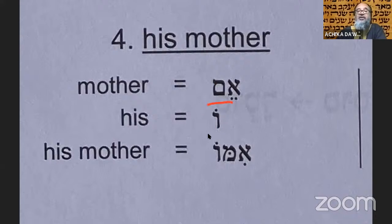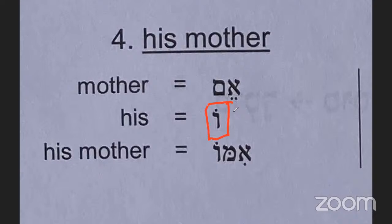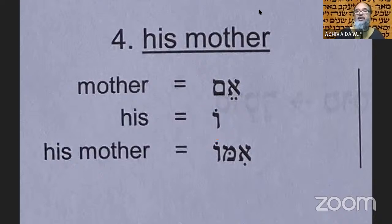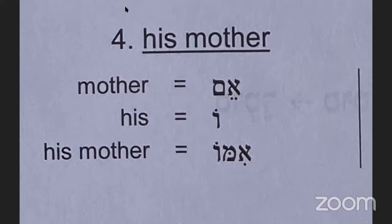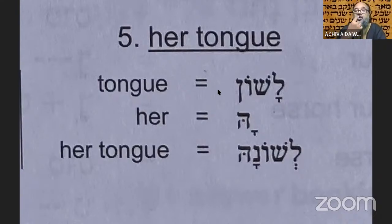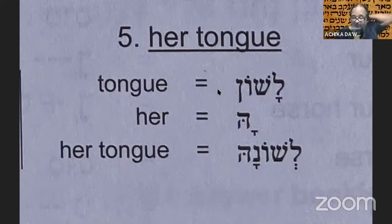So av means 'father.' His father would be avo — that's the 'o' ending for 'his.' What you're looking for is knowing the vocabulary word, then recognizing the ending. The more you read, the better you'll get — your brain will automatically recognize: I know that ending, I know that word. Here's another vocabulary word: lashon, meaning tongue or language, as in lashon hakodesh — the holy language.